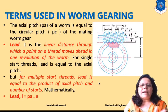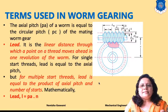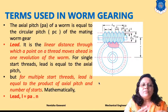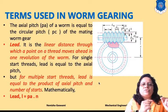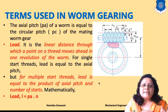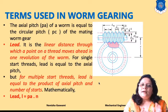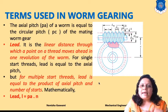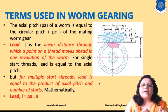The second term is lead. Lead is the linear distance through which a point on a thread moves ahead in one revolution of the worm. For a single start, lead is equal to axial pitch. But for multiple starts, lead is equal to axial pitch multiplied by the number of starts: L = PA × n, where n is the number of starts.